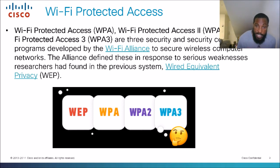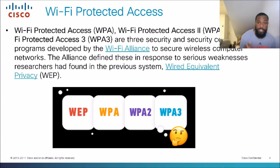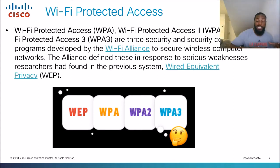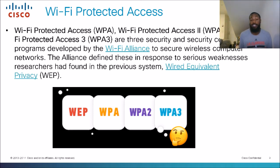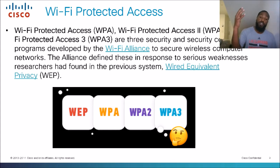The Alliance defined these protocols in response to serious weaknesses that researchers found in the previous system, wired equivalent privacy. Basically they found vulnerabilities and hackers were able to crack into these systems and crack the codes. So they had to make these security protocols stronger and stronger to where we're at today — WPA3.